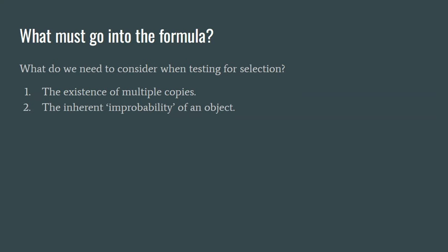What must go into this formula? Well what do we have to consider when we're testing whether something was the product of selection? The first thing is the existence of multiple copies. And the second is the inherent improbability of the object in question.